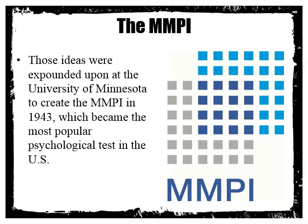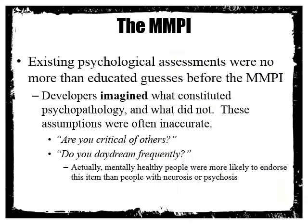Those ideas from the Personal Data Sheet were built upon at the University of Minnesota to create the MMPI in 1943, which became the most popular psychological test in the United States. What they found was that before the MMPI, existing psychological assessments were no more than educated guesses. Developers had imagined what constituted psychopathology and what did not, and these assumptions were often inaccurate.